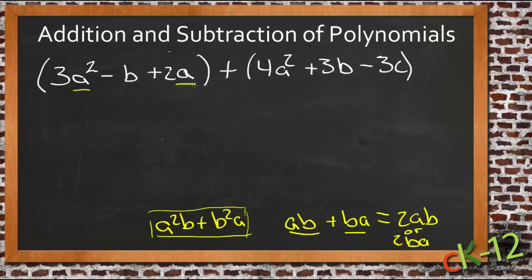So as we're applying that concept, we're just going to take this group of terms here, this polynomial expression, added to this polynomial expression over here, and we're just going to combine the things that match, the things that are the same. So on the left-hand side, we start with 3a squared.